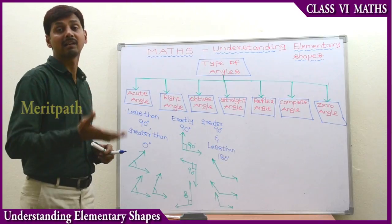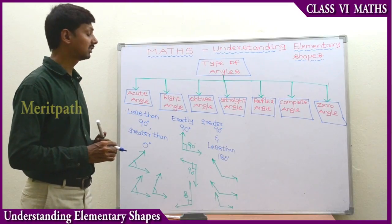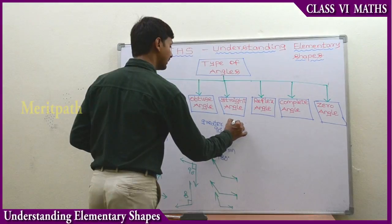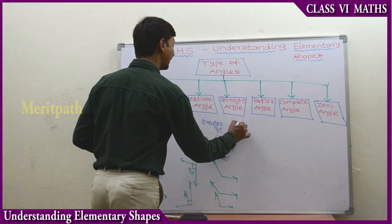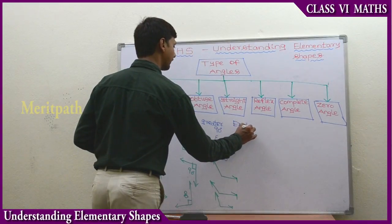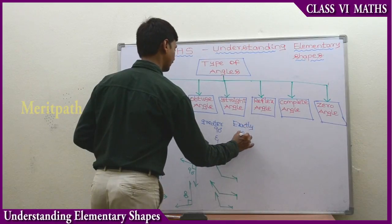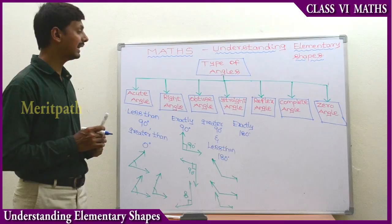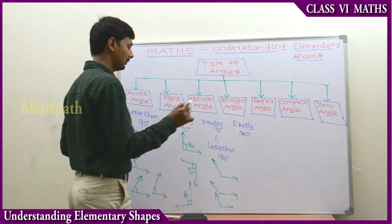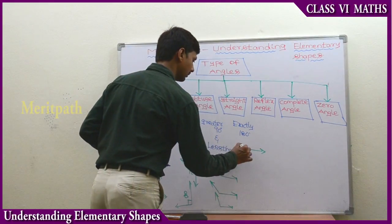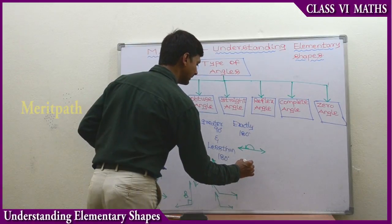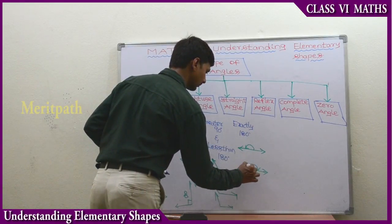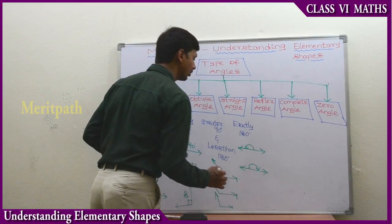Greater than 90 degrees and less than 180 degrees. Straight angle: the angle which measures exactly 180 degrees - we call it a straight angle. For example, this is a straight angle.